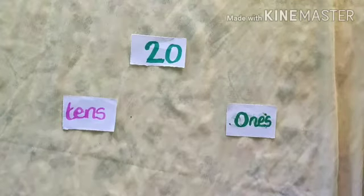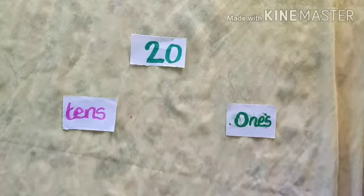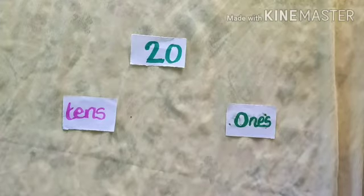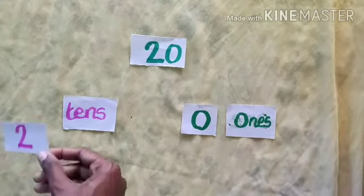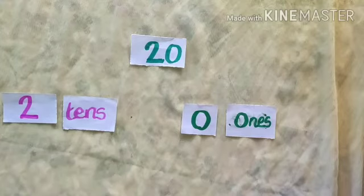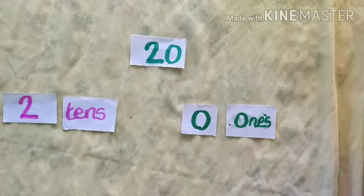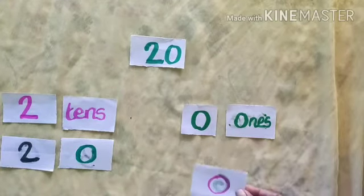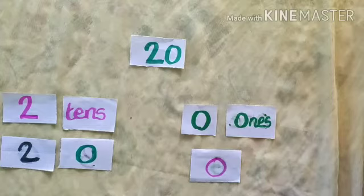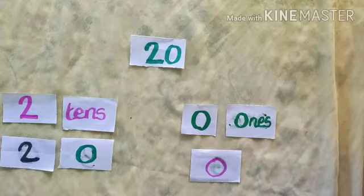5 tens is 50 and 6 ones is 6. So place value of 5 in 56 is 50, and place value of 6 in 56 is 6. Next, read this number — number 20. This is a 2 digit number with 1's place and 10's place. How many 1's? 0 ones. How many 10's? 2 tens. 2 tens is 20 and 0 ones is 0. Place value of 2 in 20 is 20, and place value of 0 in 20 is 0.